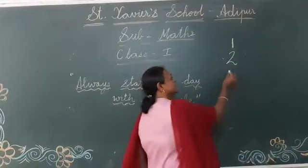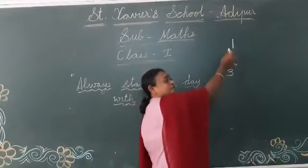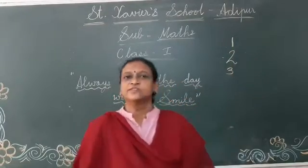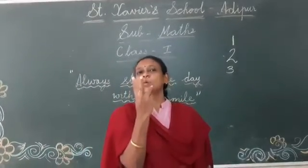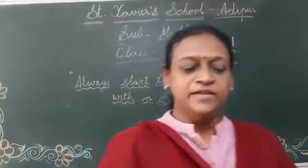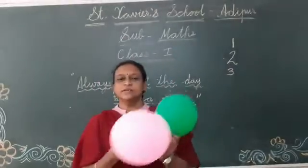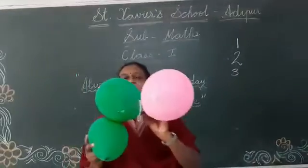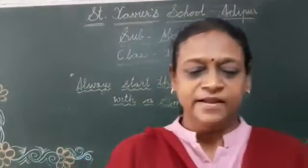What comes after 2? 3. What is this? 1, 2 and 3. Okay? So, you can now count. How many fingers? 1, 2, 3. Okay? Now, count the balloons. How many balloons can you see? 1, 2 and 3. So, how many balloons am I having? 3. Okay, children? You have to count and recognize these numbers also.